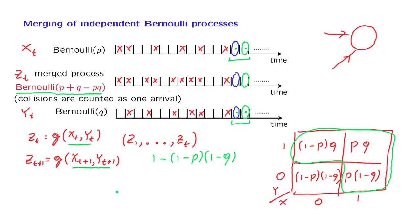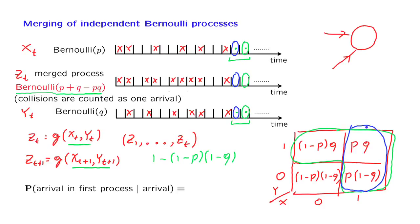Now let us answer one more question. If I tell you that at a certain time slot there was at least one arrival in the two processes — meaning there was an arrival in the merged process — what is the probability that there was an arrival in the first process? The event of an arrival in the first process is the blue event. So we want the conditional probability of the blue event given that the green event has occurred. Using the definition of conditional probability, this equals the probability that both events happen — the intersection of blue and green, which coincides with the blue event — divided by the probability of the conditioning event. The probability of the blue event is p, and the probability of the green event is p + q − pq, giving us the answer p divided by (p + q − pq).